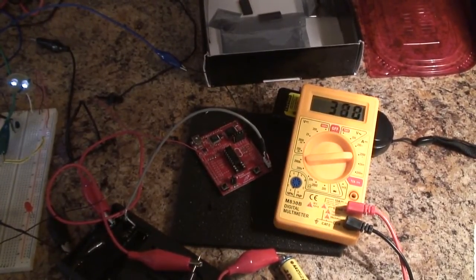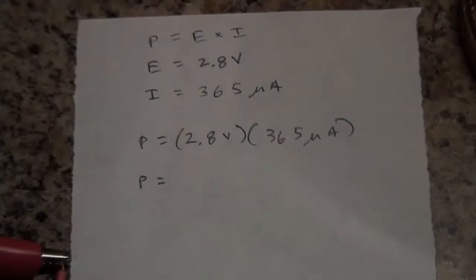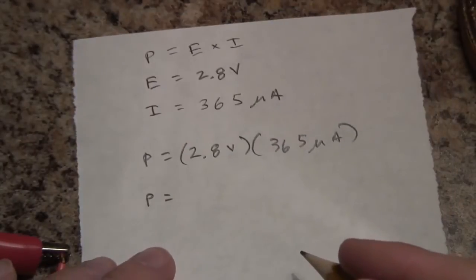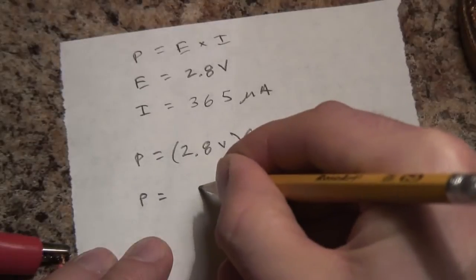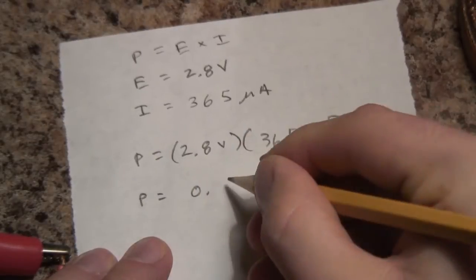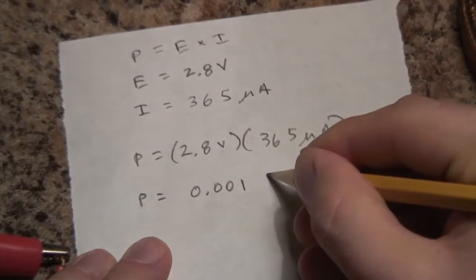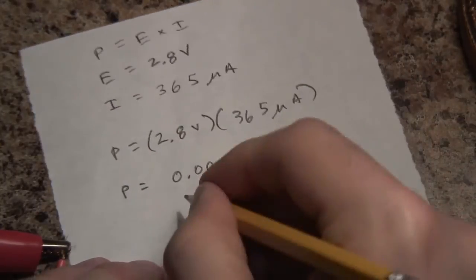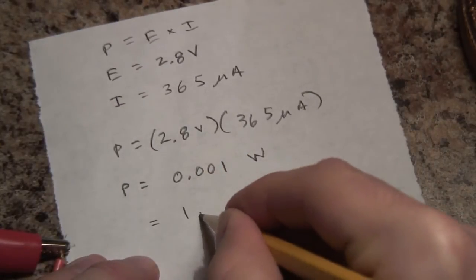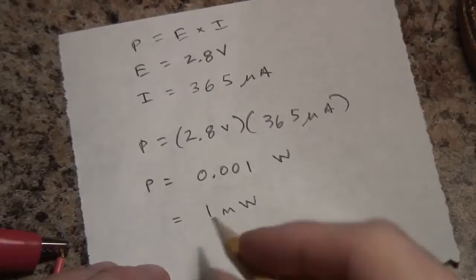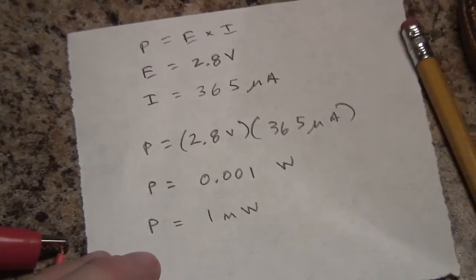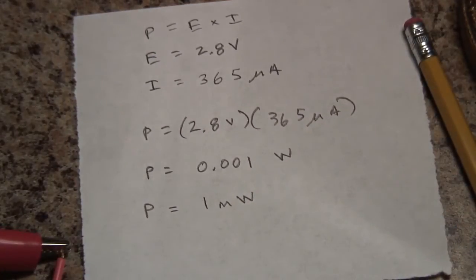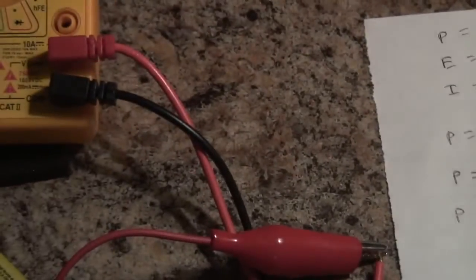So now we can calculate the power this thing uses. If you do the calculations on this, you'll find out that the power is 0.001 watts, which is also equal to 1 milliwatt. That's small. That's a tiny amount of energy being used.